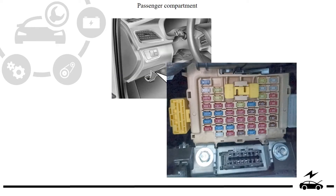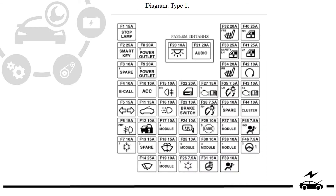Passenger compartment fuse box: location and diagram, type 1.